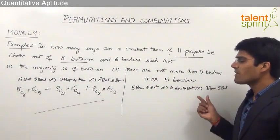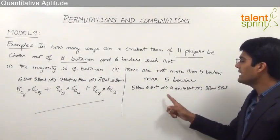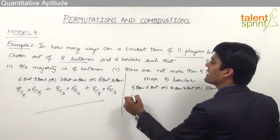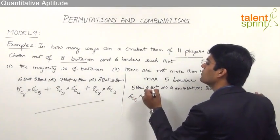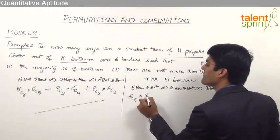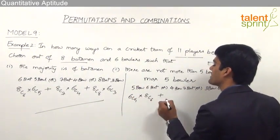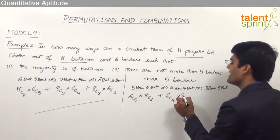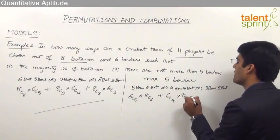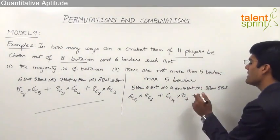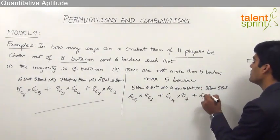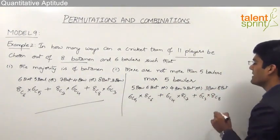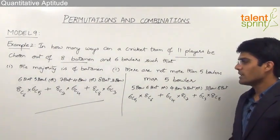By selecting these combinations and adding them: 5 bowlers out of 6 is 6C5, with 6 batsmen out of 8 as 8C6; plus 4 bowlers as 6C4 with 7 batsmen as 8C7; plus 3 bowlers as 6C3 with 8 batsmen out of 8 as 8C8. So this gives the answer for the condition of not more than 5 bowlers: 6C5×8C6 + 6C4×8C7 + 6C3×8C8.